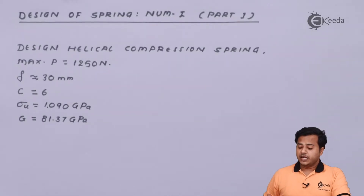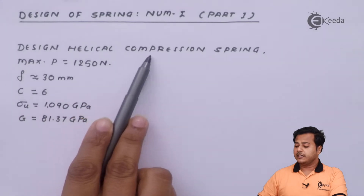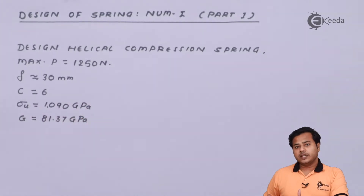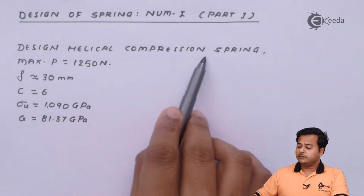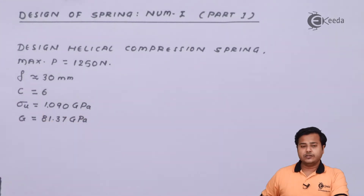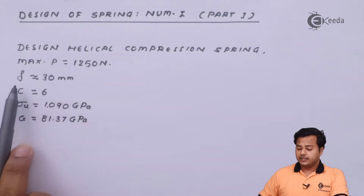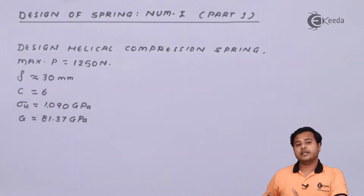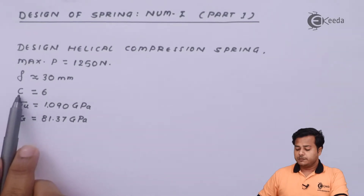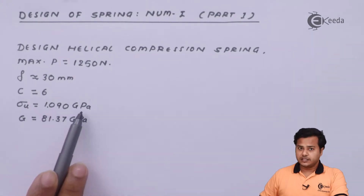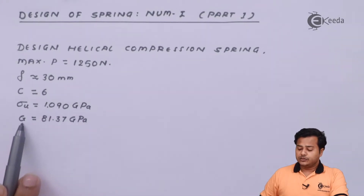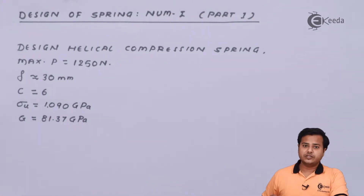We have to design a helical compression spring. We know that there is a difference between helical compression and helical tensile springs. We have to design a helical compression spring for the given values where maximum load, maximum feasible deflection, spring index, ultimate stress for the given material, and the constant of rigidity are all given.